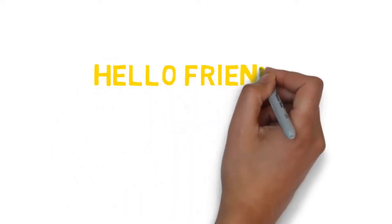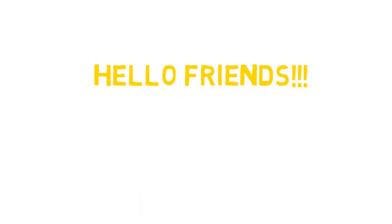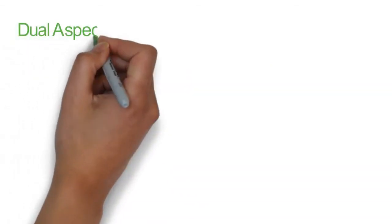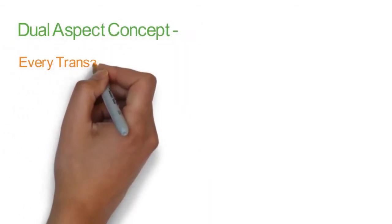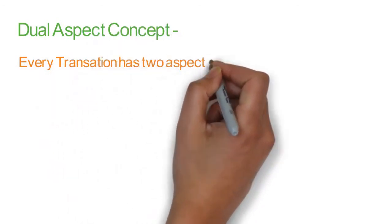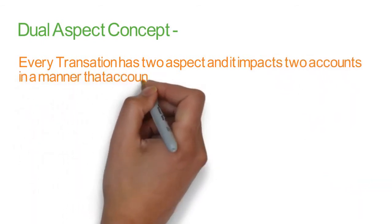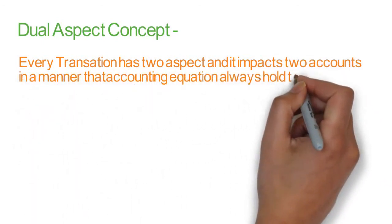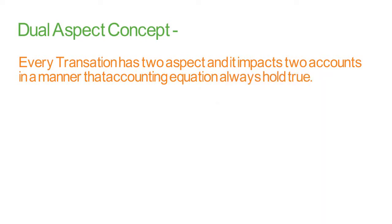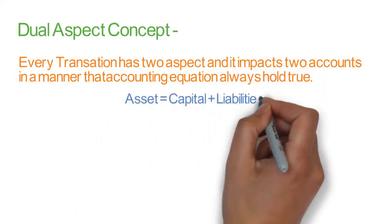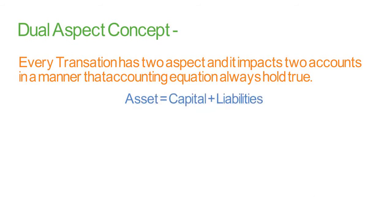In the last video we discussed the business entity concept and money measurement concept. Today we will discuss the dual aspect concept. Every transaction has two aspects and it impacts two accounts in a manner that the accounting equation always holds — assets equal capital plus liabilities. We'll study this in coming chapters.